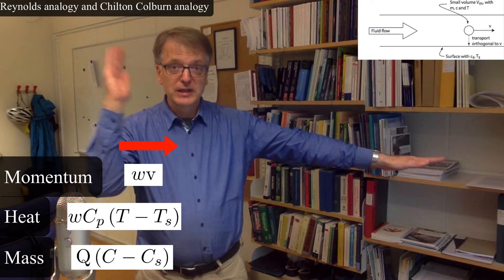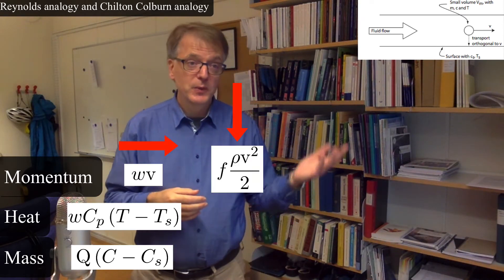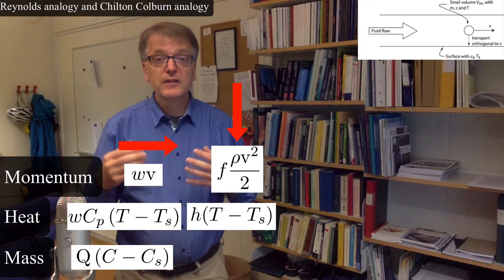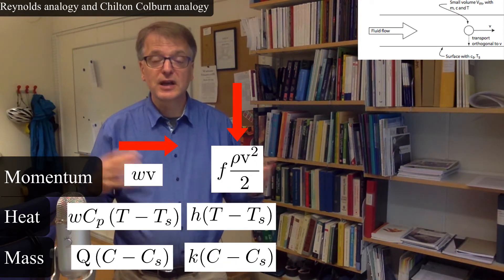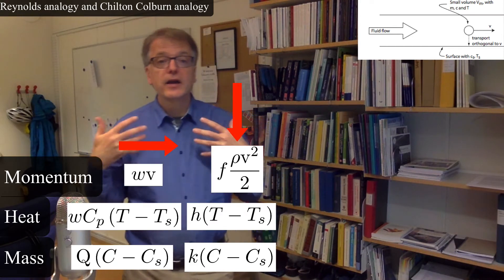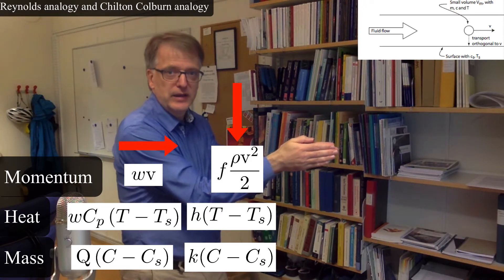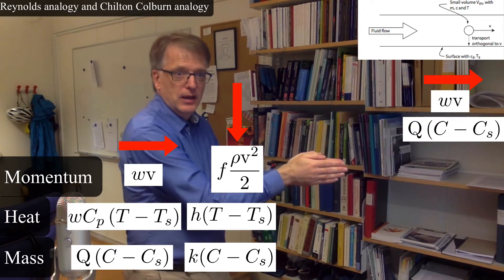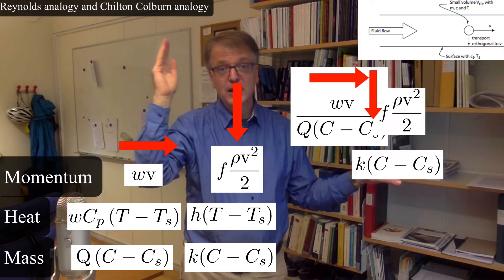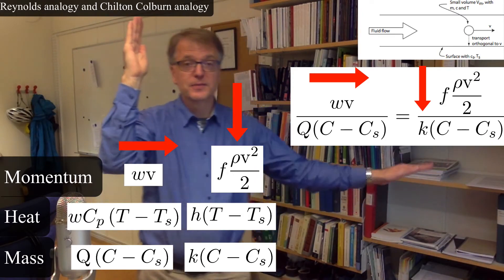So that's the convective transport in that direction. Then we relate that to the transport in the other direction, and there we use the transfer coefficients. For the transfer coefficient for momentum we get this equation here; for heat you have the usual h times the temperature difference; and for mass transfer you have the mass transfer coefficient times the difference in concentration. Reynolds' analogy now says that if you know the momentum transport in this direction and you know the transport of mass in that direction, then how they relate to each other should be the same as the ratio between the momentum transport and the transport of mass in the direction orthogonal to the convection direction.